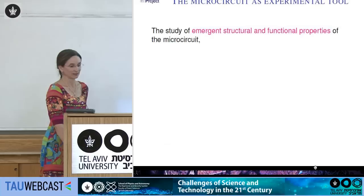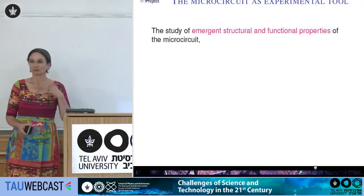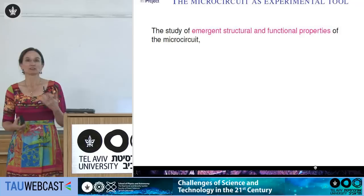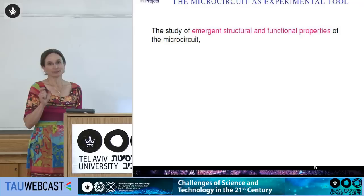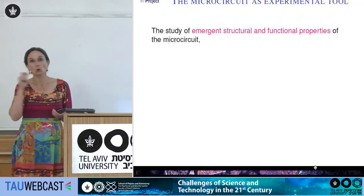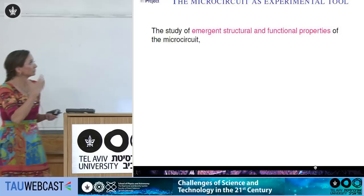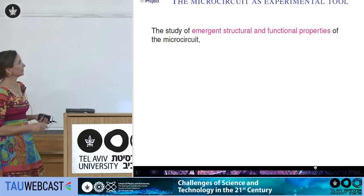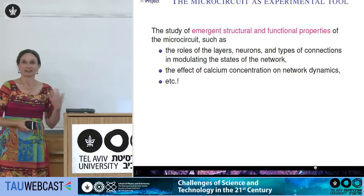What is the microcircuit good for as an experimental tool? One can study what structural and functional properties emerge from this process. While something is known about how certain pairs of neurons connect, there are 55 times 55 possible pairs to study — an enormous problem — and only a small fraction of those pairs is well understood. By extrapolating from the wet lab data available, one can ask what emerges when all of this is put together, and examine what roles different layers, neuron types, and connections play in network dynamics.